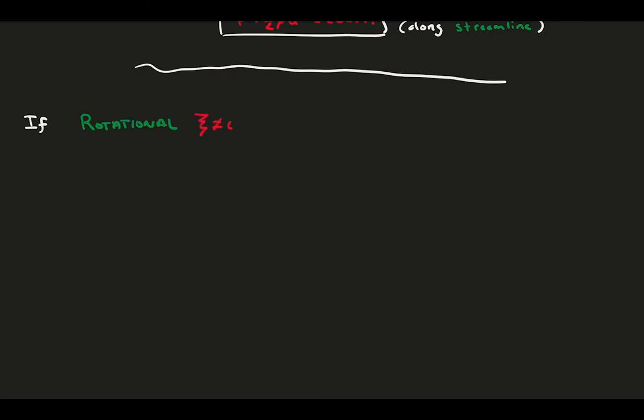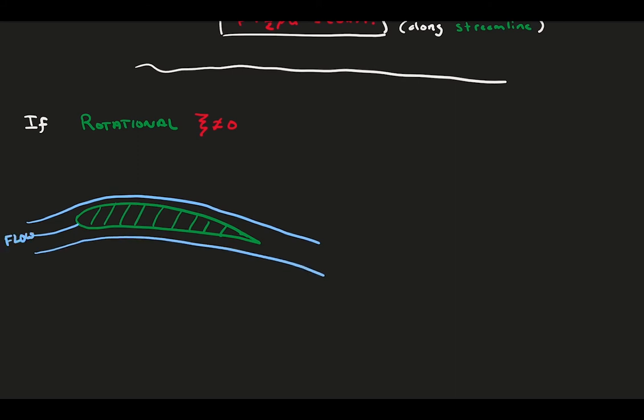If flow is rotational, like this flow over an airfoil, meaning there is vorticity somewhere in our flow, then the Bernoulli equation only works along a streamline.